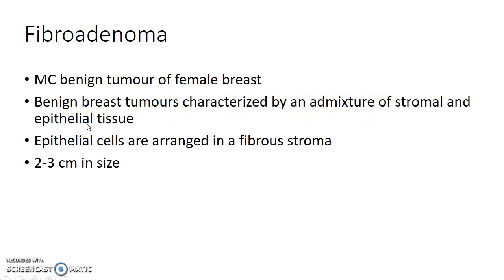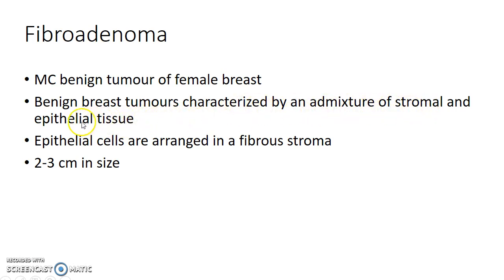Now let us break the term fibroadenoma. Fibro refers to the stromal tissue and adenoma refers to the glandular structures in the epithelial tissue. Oma means tumor. So fibroadenoma is basically a tumor which contains both stromal and epithelial tissue. To make it simpler, fibroadenomas contain epithelial cells arranged in a fibrous stroma.